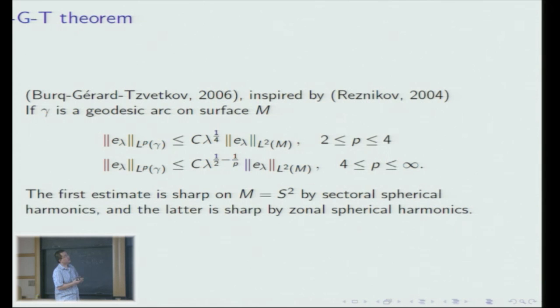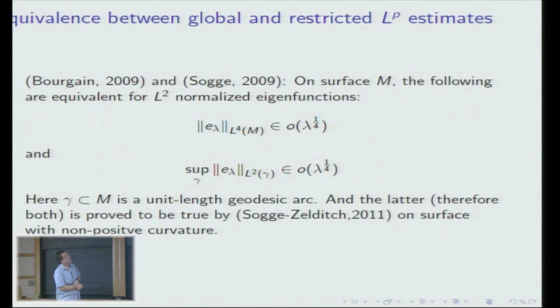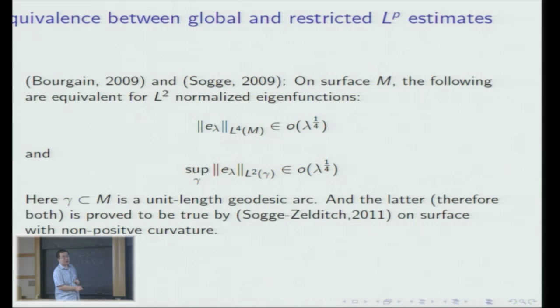There have been many investigations of the relation between the restricted LP estimates and the global LP estimates. The most typical one: in 2009, Sogge, based on early work by Bérard, proved that on a surface, if you have a unit-length geodesic arc and all eigenfunctions are L2-normalized, then two statements are actually equivalent. This type of LP norm is actually a Kakeya-type maximal function — measuring the size of eigenfunctions in various tubes. In 2011, Sogge and Zelditch proved this is true on surfaces with non-positive curvature.